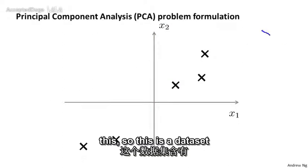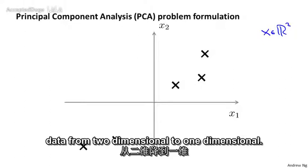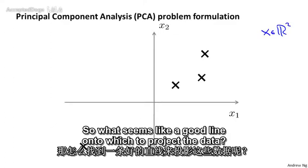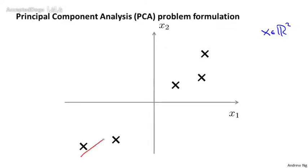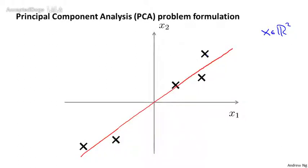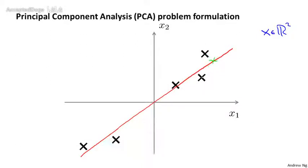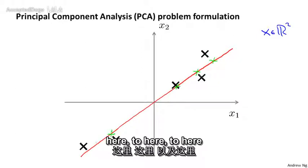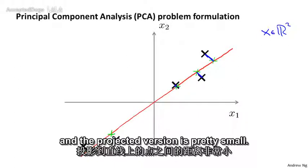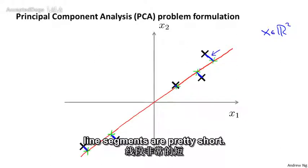Let's say we have a data set like this — a data set of examples x in R2. I want to reduce the dimension of the data from two dimensional to one dimensional. In other words, I would like to find a line onto which to project the data. A line like this might be a pretty good choice, because if you look at where the projected versions of the points go, the distance between each point and its projected version is pretty small — these blue line segments are pretty short.